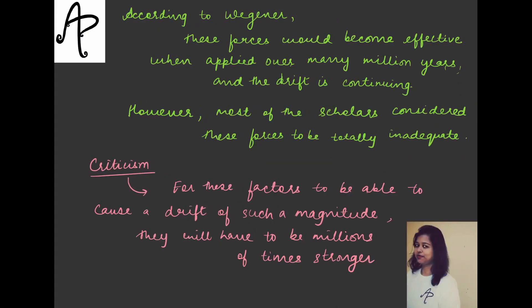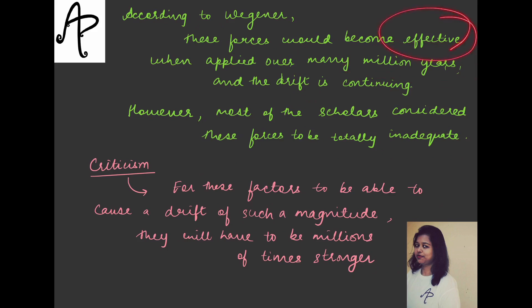We have also seen that Wegener proposed that if these forces would have been applied over many, many million years, then the drift would have been continuing. However, many scholars do not agree to this — they feel that these forces are not sufficient enough to cause a drift of such a vast magnitude.